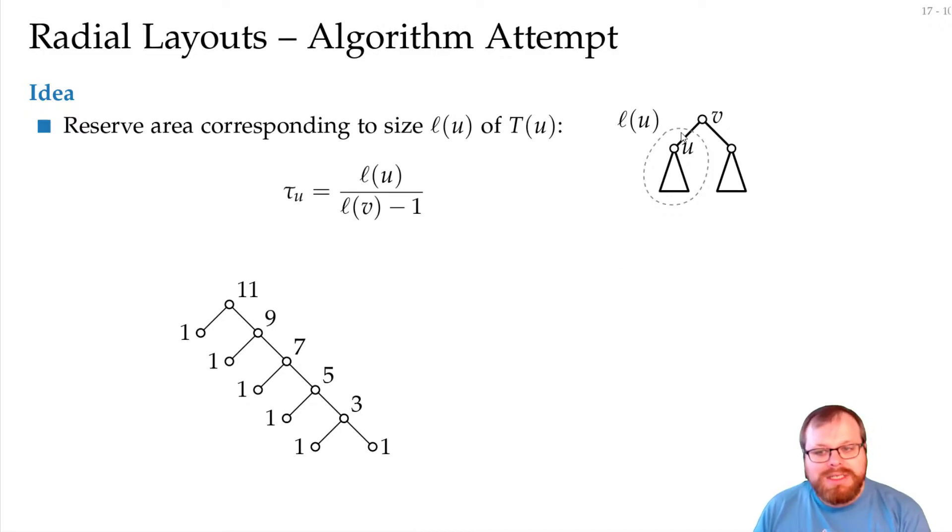And now, this subtree u should get some area that is the size of it divided by the size of this parent minus 1. So basically, if we have many children here, then each subtree gets some area proportional to the size of it. And we want to place the parent of the subtree in the middle of the area.